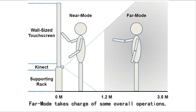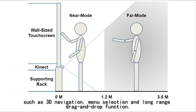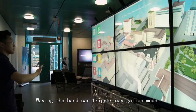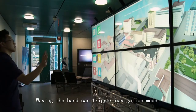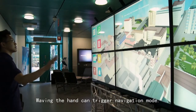Far mode takes charge of some overall operations such as 3D navigation, menu selection, and long-range drag-and-drop function. Waving the hand can trigger navigation mode.